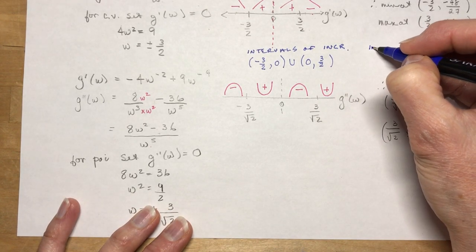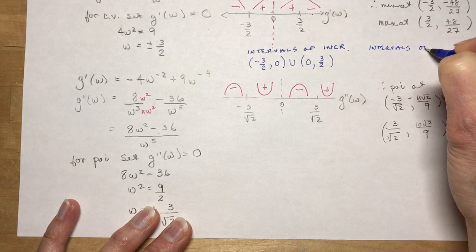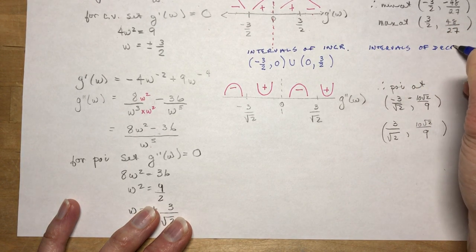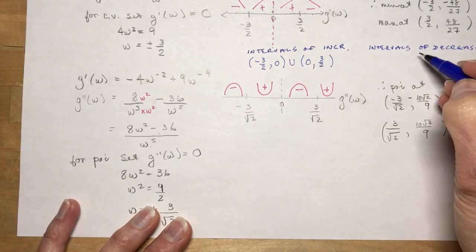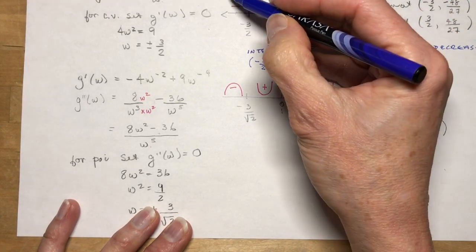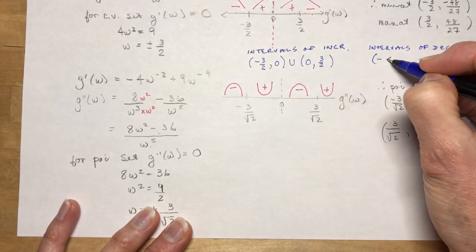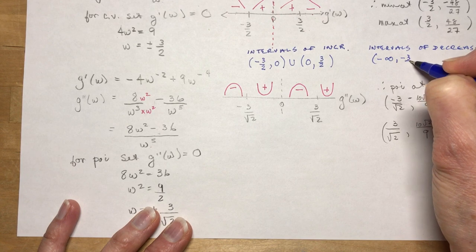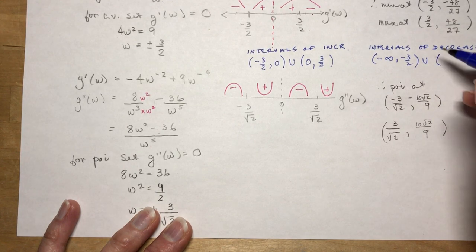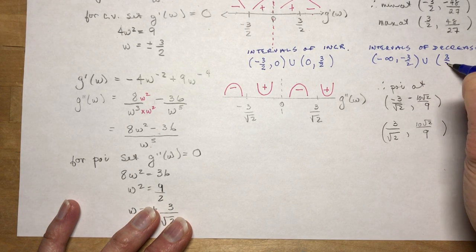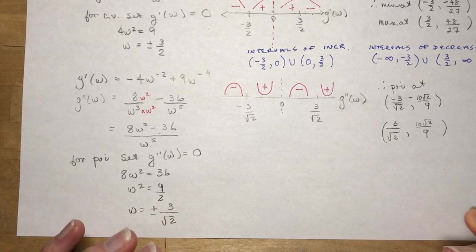Intervals of decrease: where is g'(w) negative? That's (−∞, −3/2) and (3/2, ∞). And there are my intervals. Easy.